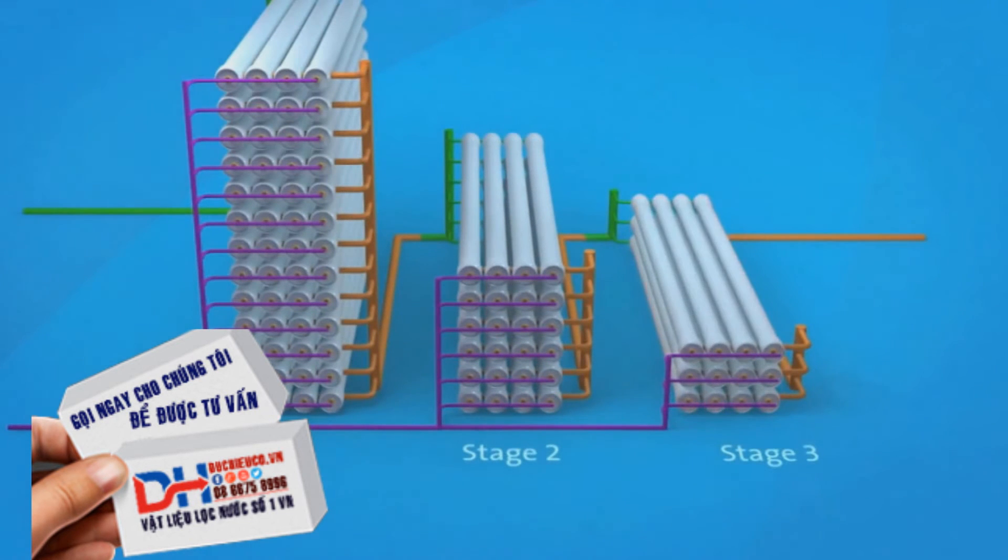58 million litres of feed water enters the reverse osmosis system on a daily basis. As the feed water passes through each stage, more recycled water is extracted.